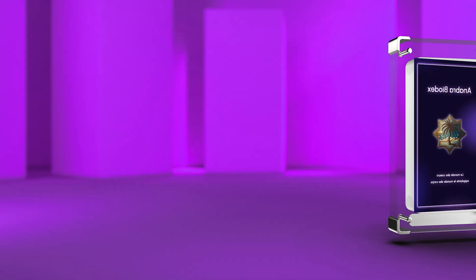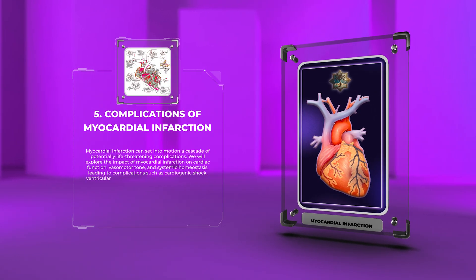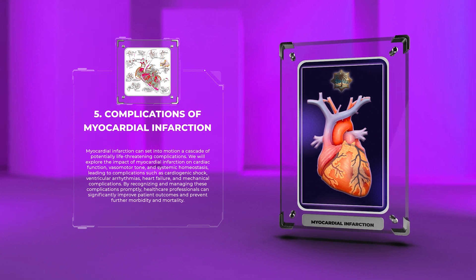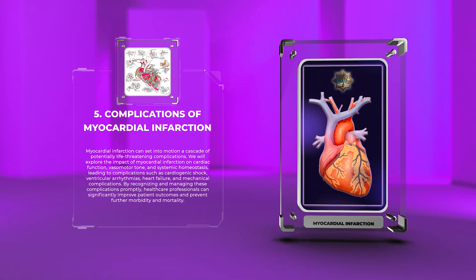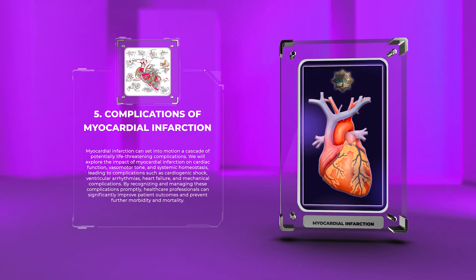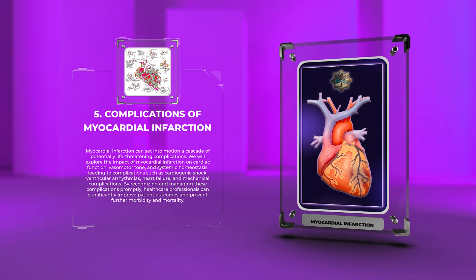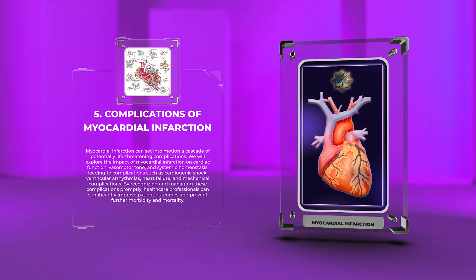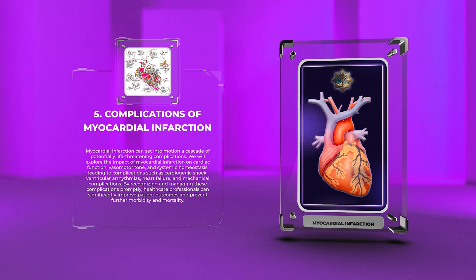Myocardial infarction can set into motion a cascade of potentially life-threatening complications. We will explore the impact of myocardial infarction on cardiac function, vasomotor tone, and systemic homeostasis, leading to complications such as cardiogenic shock, ventricular arrhythmias, heart failure, and mechanical complications. By recognizing and managing these complications promptly, healthcare professionals can significantly improve patient outcomes and prevent further morbidity and mortality.